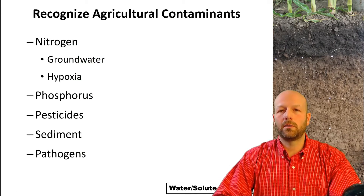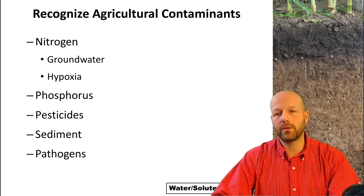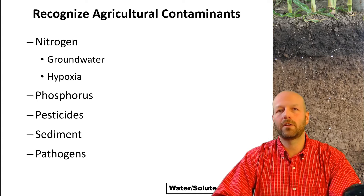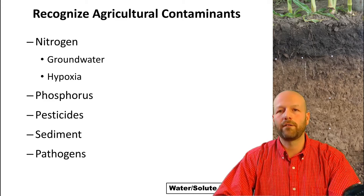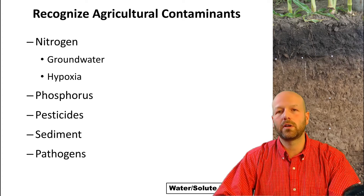Another topic I want to talk about is water quality, which ties in very nicely to water management and drain management. We have to realize that a lot of chemicals used for agricultural production can be a problem to the environment. One issue we have is excess nitrogen, which can be a problem for groundwater and can also cause issues further downstream — I'm sure you've heard of the hypoxia zone in the Gulf of Mexico, which affects fisheries and has economic impact. Another issue we contend with here in Wisconsin is phosphorus, which can cause algae blooms and reduce oxygen levels in water bodies.